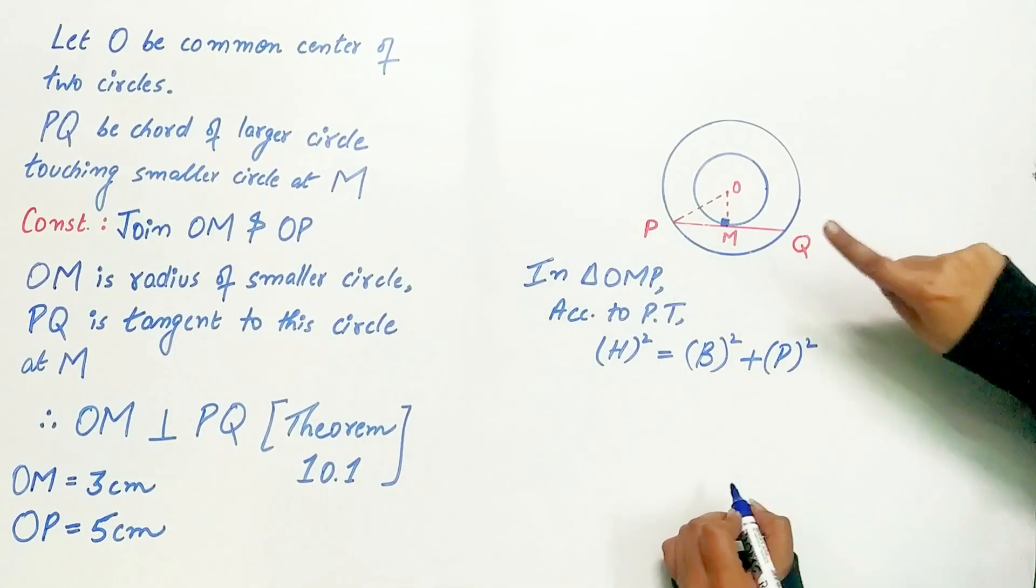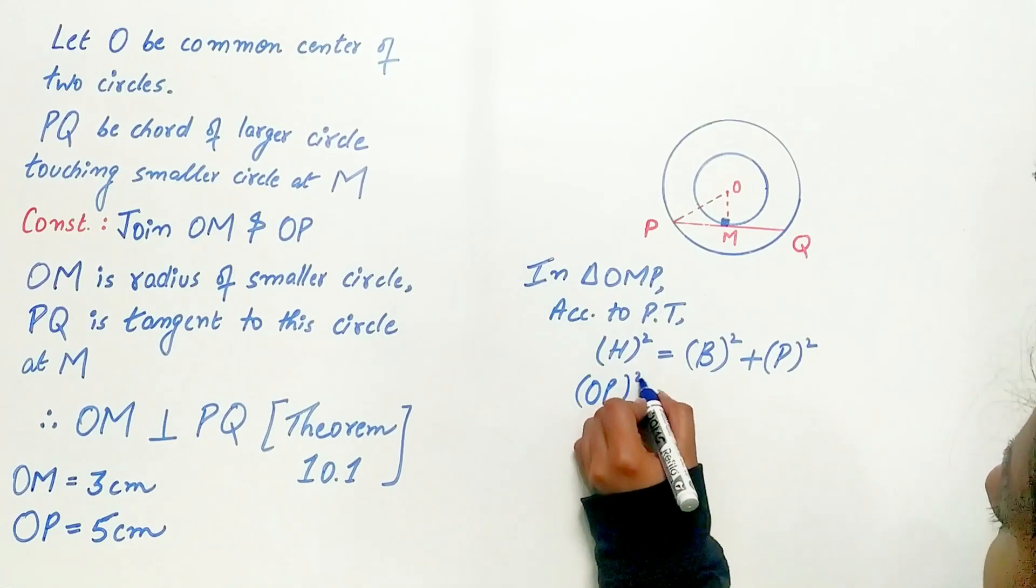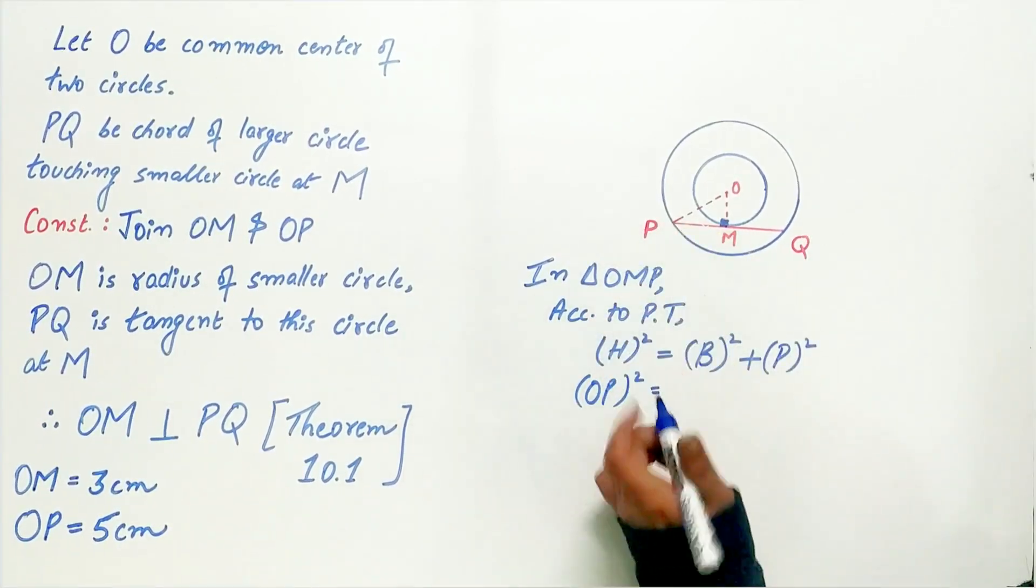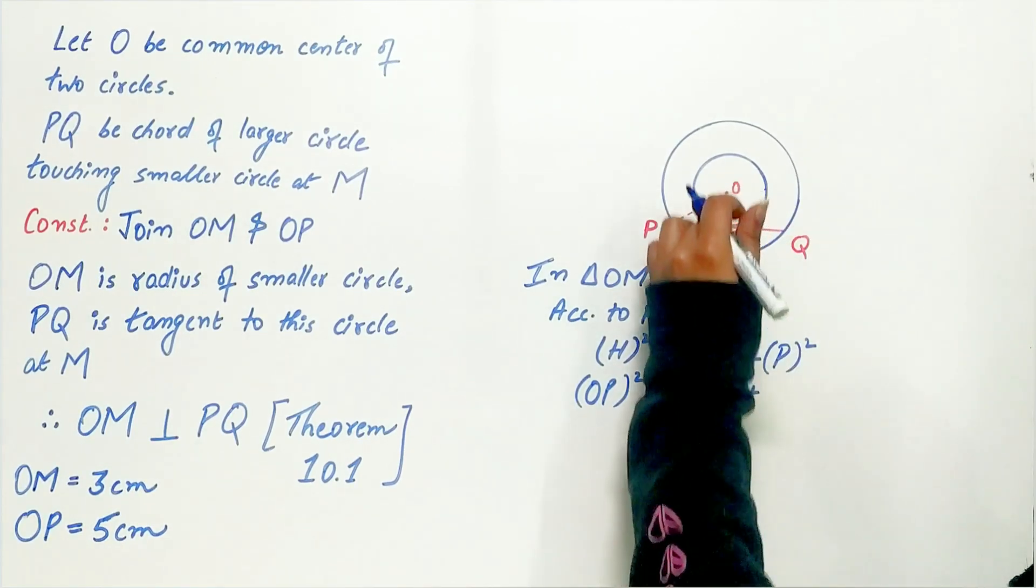Hypotenuse in this case is OP, the longest side of the triangle. Base is PM and perpendicular is OM.